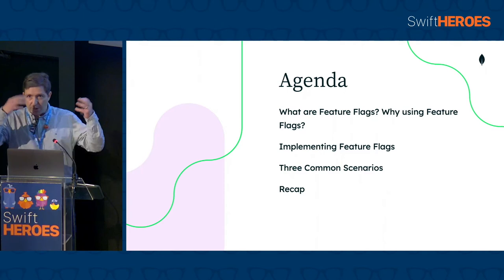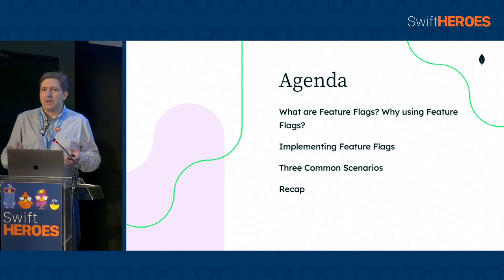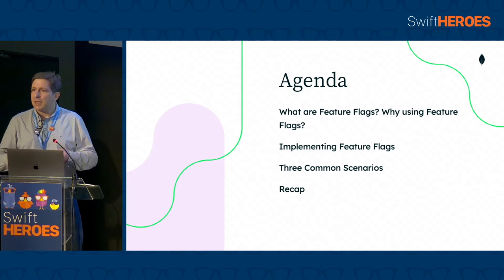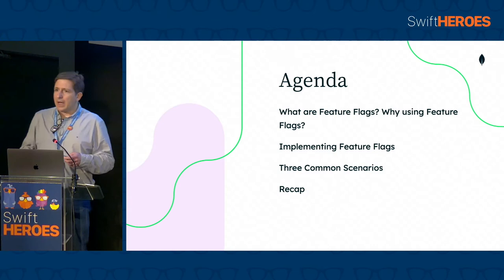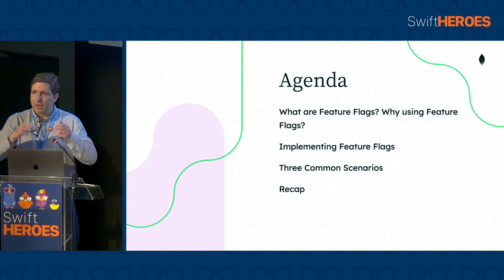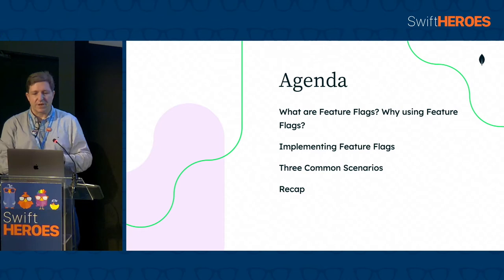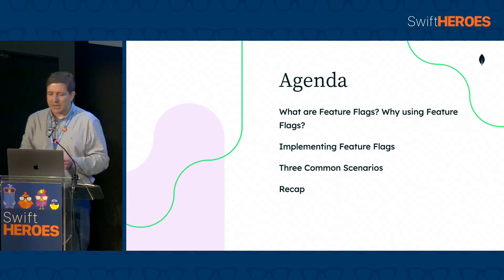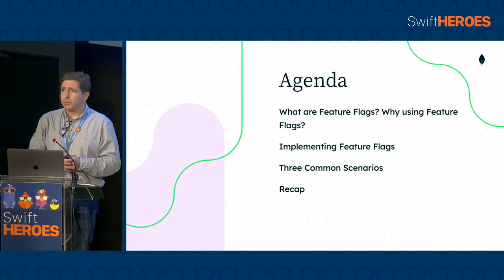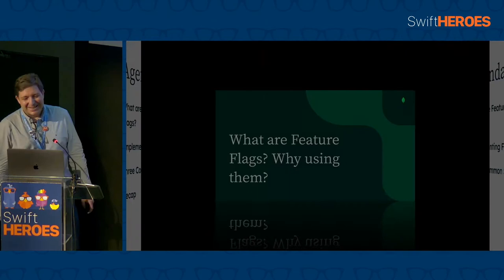Let me go through the agenda. I will start by talking about why we should be worrying about feature flags, why they are useful, why they can be something that we want to use in our projects. Then we will talk about how to implement them, the different options, the most common ones, and when to use them for different scenarios. I will cover three, which cover most of the scenarios you can have in your application. Then I will do a brief recap.